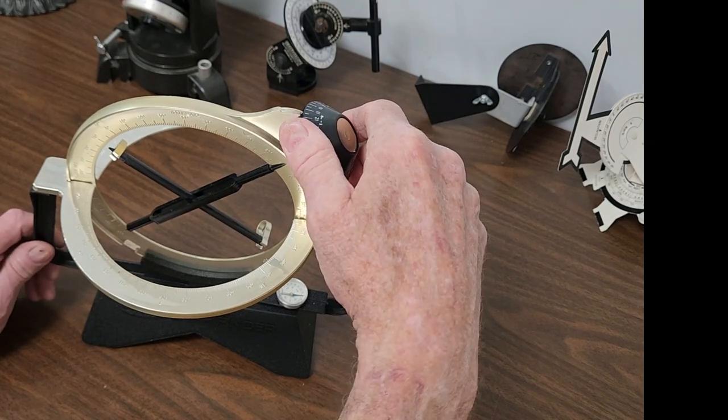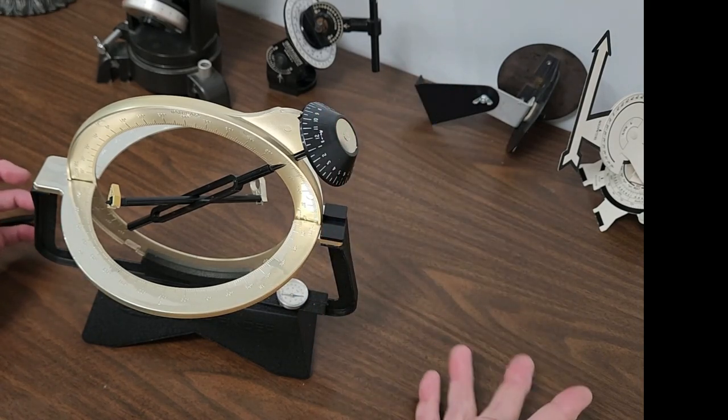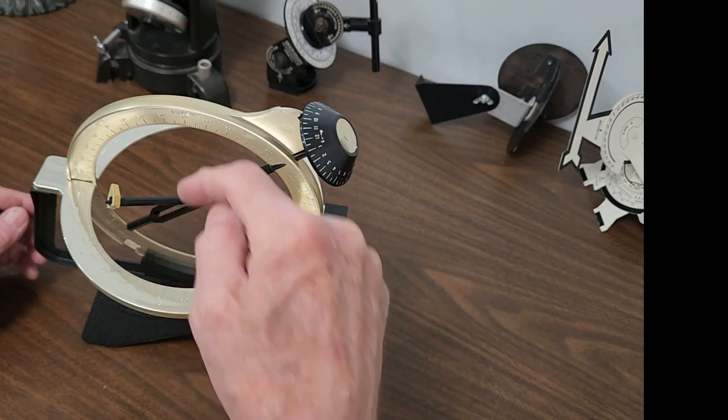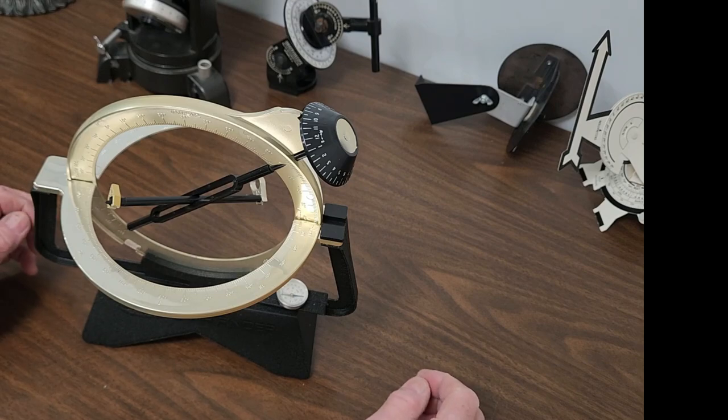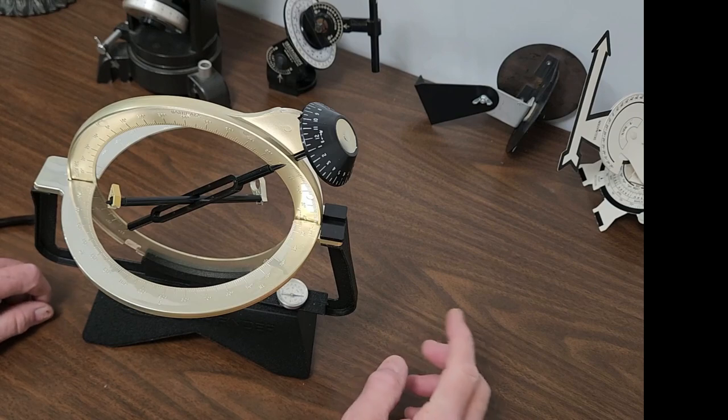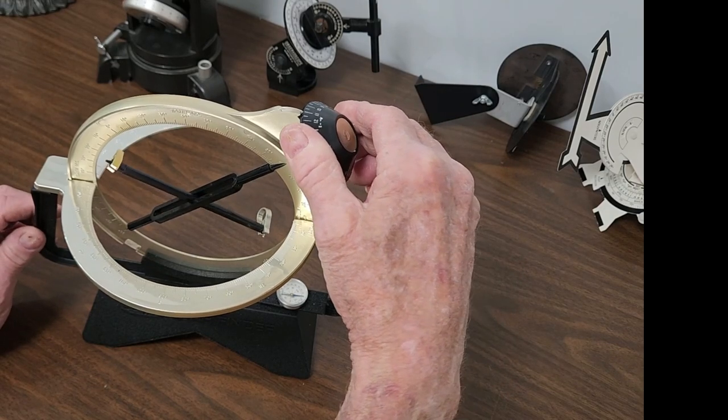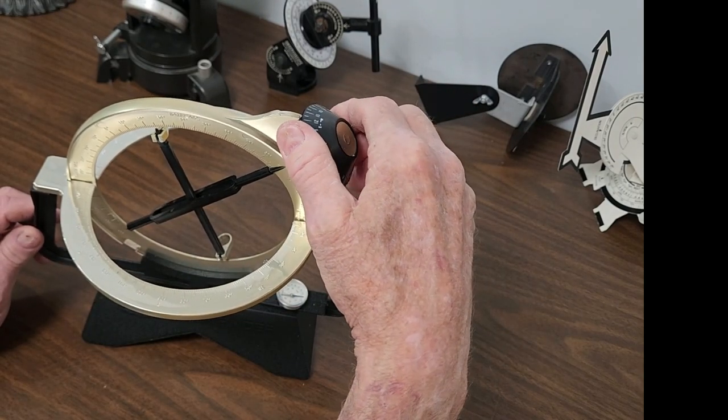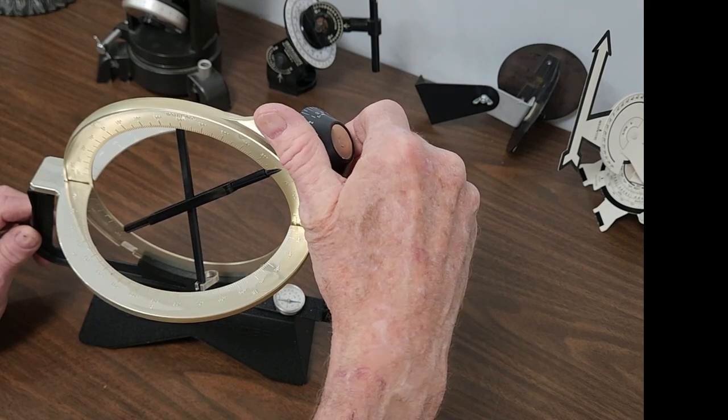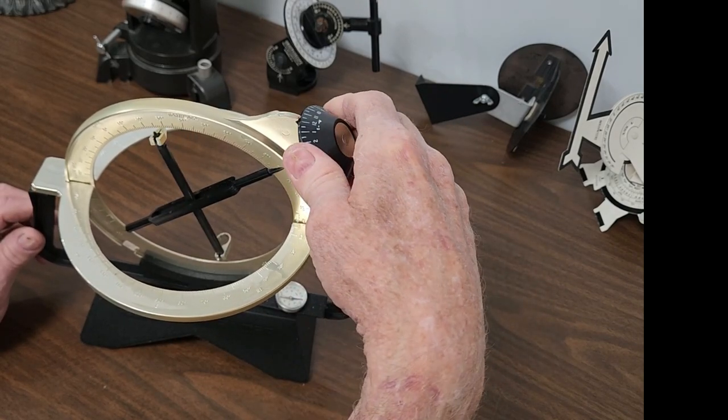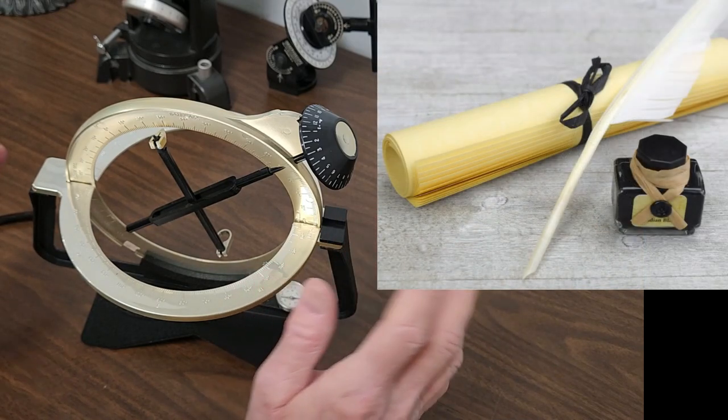Then, if you point at Betelgeuse, if you know where Betelgeuse is and you point at it, you can read up here and get the hour angle, which is the offset from the local meridian that Betelgeuse is right now. In this case, it's going to be, looks like if it was here, it would be about two and a half hours or so. So, right now, Betelgeuse, if it was here, would be offset by two and a half hours. Everything else would be offset by two and a half hours. So, if you wanted to find something, you would point up here, figure out the declination, and then offset by the appropriate amount. You've got to make this calculation.